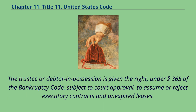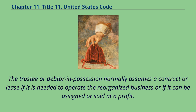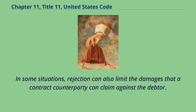The trustee or debtor in possession is given the right, under Section 365 of the Bankruptcy Code, subject to court approval, to assume or reject executory contracts and unexpired leases. The trustee or debtor in possession must assume or reject an executory contract in its entirety, unless some portion is severable. Normally, a contract or lease is assumed if needed to operate the reorganized business or if it can be assigned or sold at a profit, and rejected to transform damaged claims from nonperformance into a prepetition claim, potentially limiting damages the counterparty can claim.